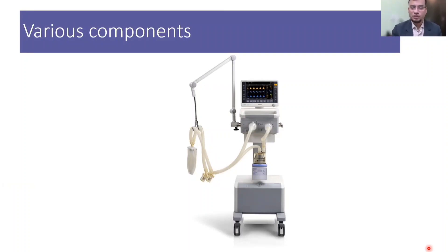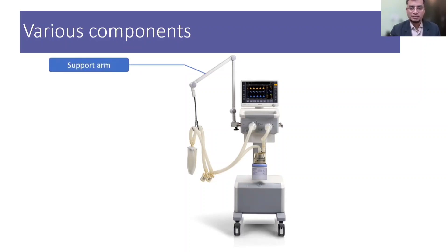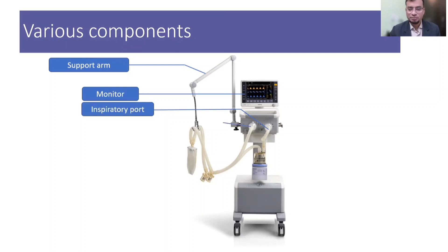Various parts of a ventilator and its connections are shown in this diagram. There is a support arm which is a metallic and flexible arm that supports and holds the ventilator circuit and protects it from kinking or damage. There is a monitor touch screen to display various controls and monitoring parameters. From the ventilator, gases come through to an inspiratory port and are driven back to the expiratory port, and both ports have inspiratory and expiratory valves.